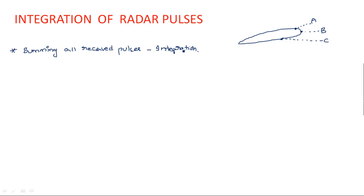The process of summing all received pulses is nothing but integration. Integration means summing up all the information — here, summing of all received pulses. As we are transmitting a single pulse, we will receive a number of echo pulses because of the number of targets, and we need to integrate all of these together.